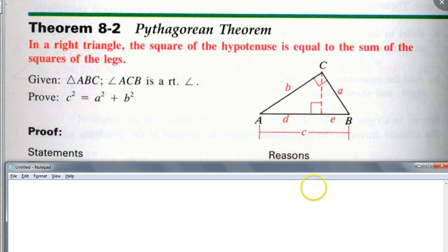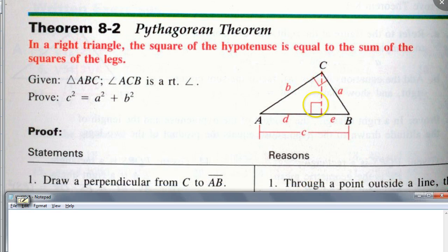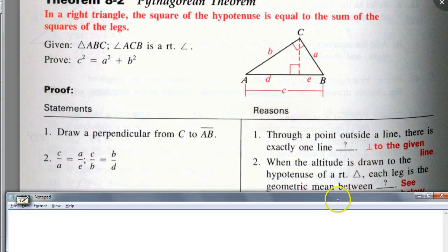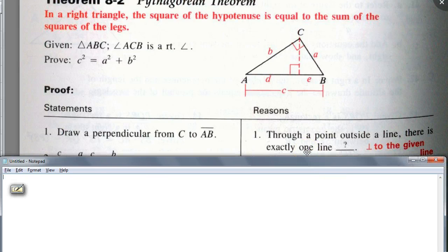So watch this proof. They do it nicely. So first, of course, you're going to draw that perpendicular line from C to AB. Is that okay? Once you've done that, right, and there's a reason, okay? Once you've done that, right, it's because to a point outside the line, there's exactly one line that is perpendicular to the given line, right?